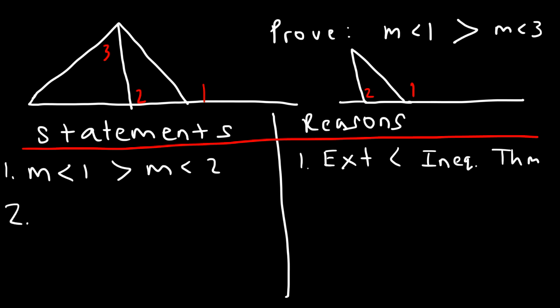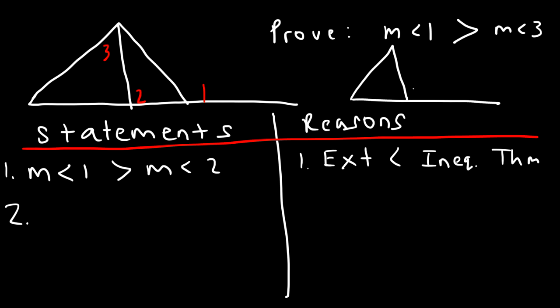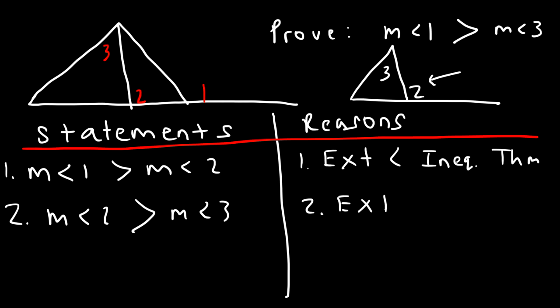We can also say that angle 2 is greater than angle 3. If we just focus on the triangle on the left, we have angle 2 and angle 3. For this picture, angle 2 is the exterior angle and angle 3 is the remote interior angle. Therefore, the measure of angle 2 is greater than the measure of angle 3 — for the same reason: the exterior angle inequality theorem.